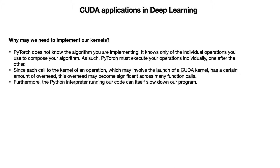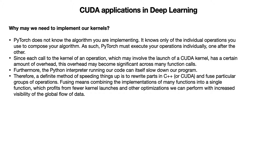Furthermore, the Python interpreter running our code can itself slow down our program. Therefore, a definite method of speeding things up is to rewrite parts in C++ or CUDA and fuse particular groups of operations. Fusing means combining the implementation of many functions into a single function, which can profit from fewer kernel launches and other optimizations with increased visibility of the global flow of data.